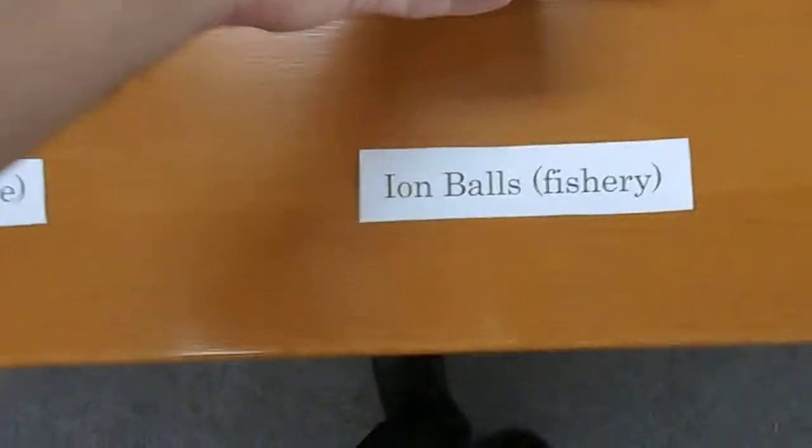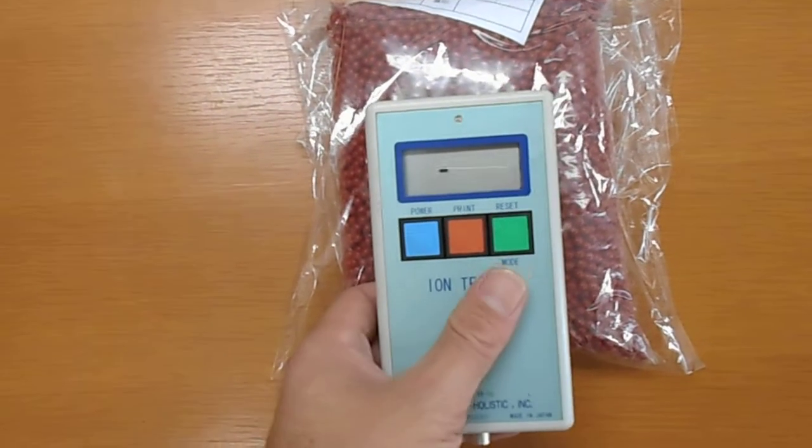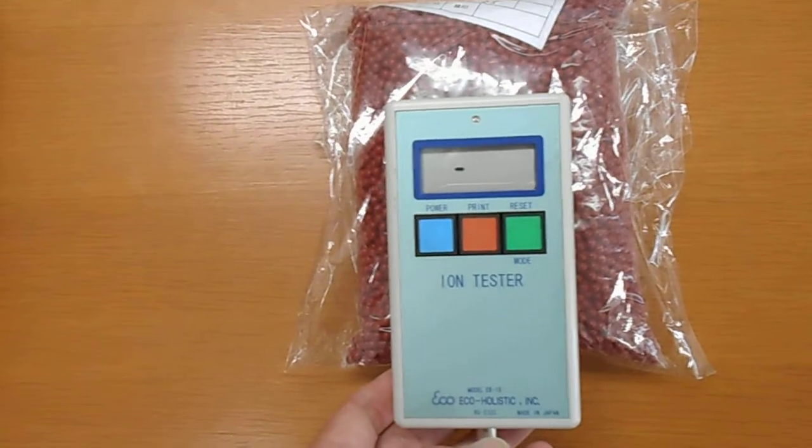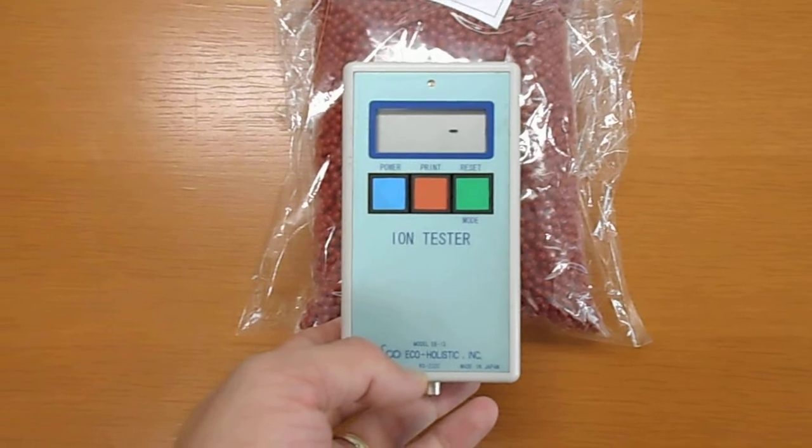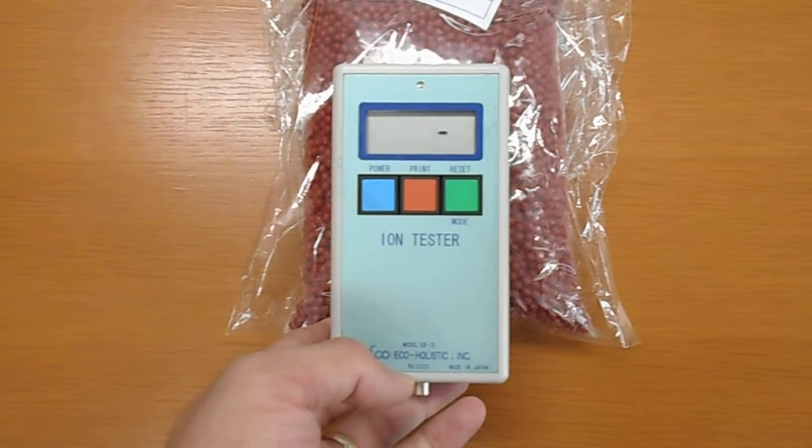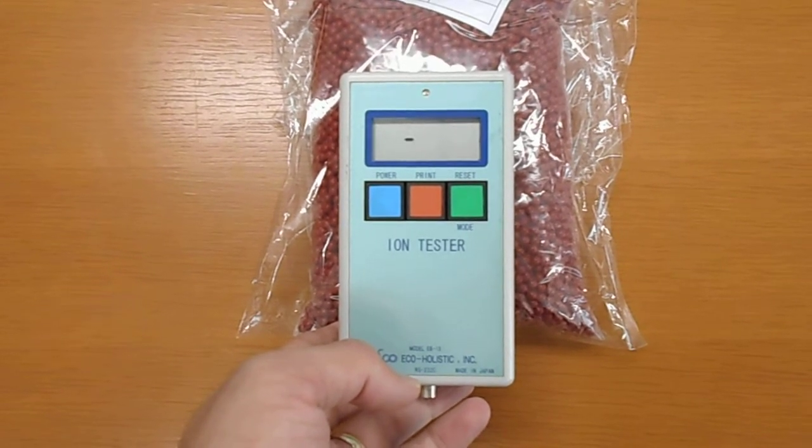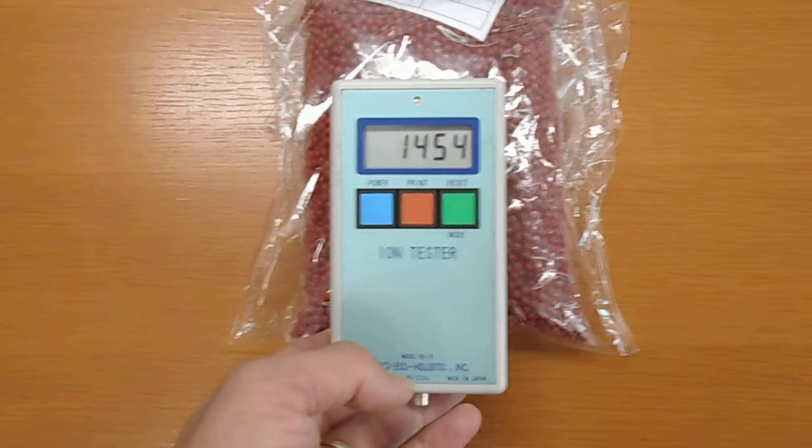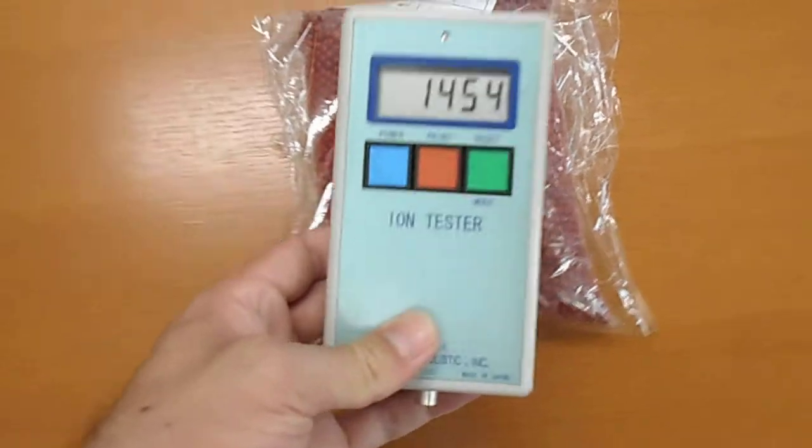Next, this is the iron balls we use mainly for fishery. Three, reset. One thousand four hundred and fifty four.